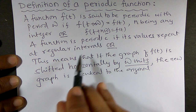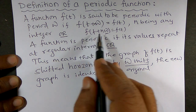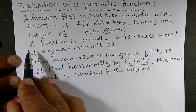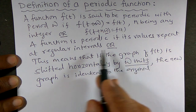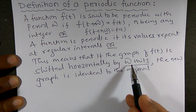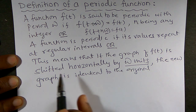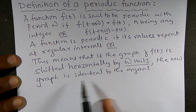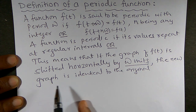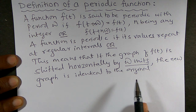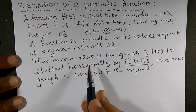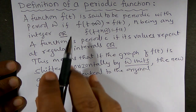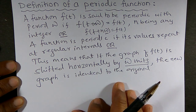When we draw the graph of this function, the graph will move horizontally — left hand side, right hand side — shifting omega units to either side. The new graph is similar to the original graph. That is the meaning of a periodic function.